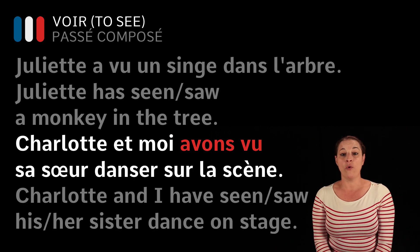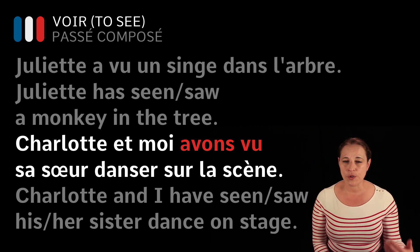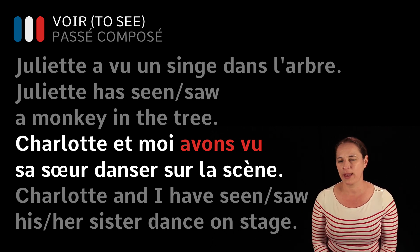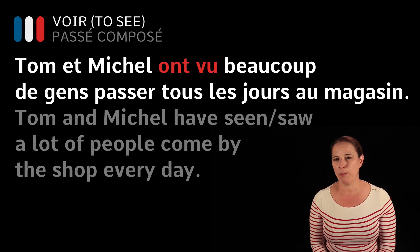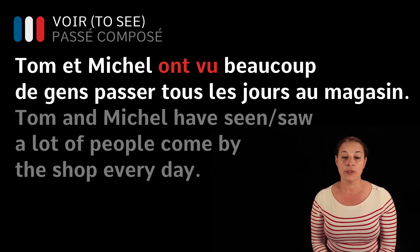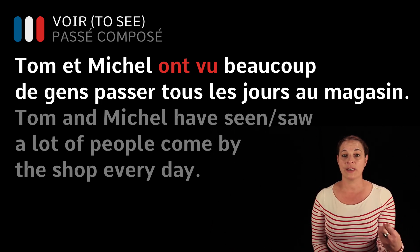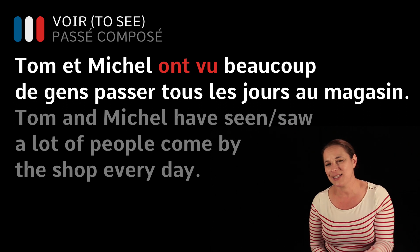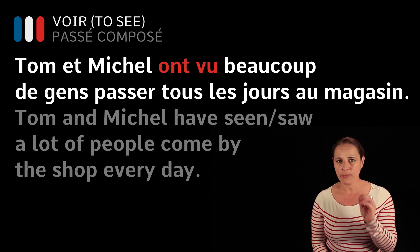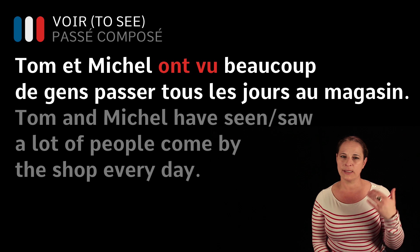Charlotte et moi avons vu sa sœur danser sur la scène — Charlotte and I have seen, or saw, his/her sister dance on stage. Tom et Michel ont vu beaucoup de gens passer tous les jours au magasin — Tom and Michel saw, or have seen, many people come by the shop every day. All we did was replace the present tense forms with the passé composé. A good exercise: write a sentence in the present tense and then rewrite it in the past and future tense.